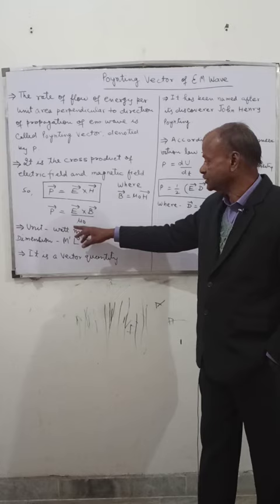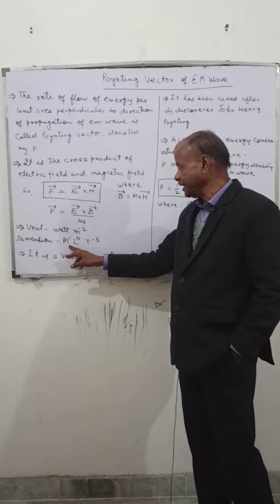Unit: watt per meter square. Dimensions: M1 L0 T minus 3. It is a vector quantity.